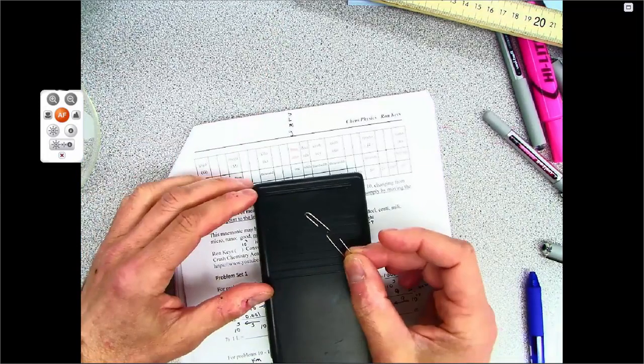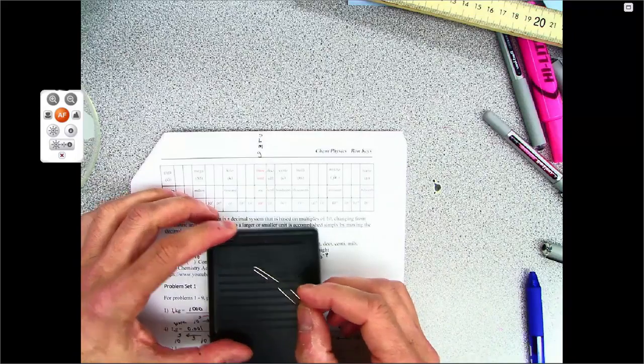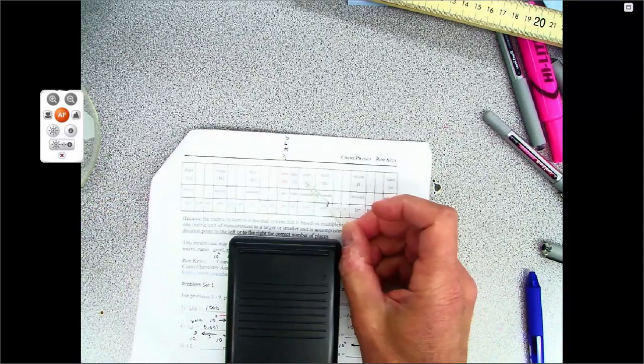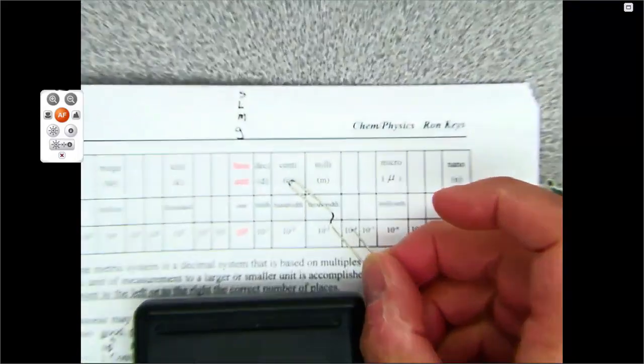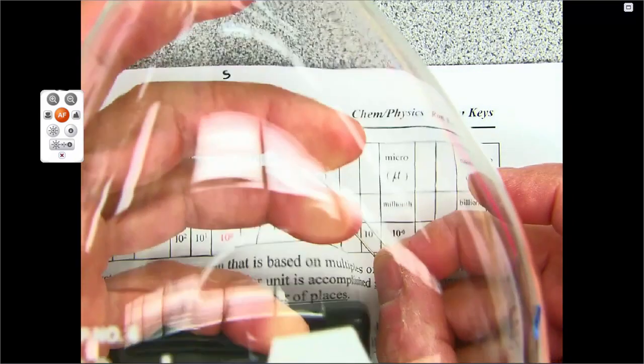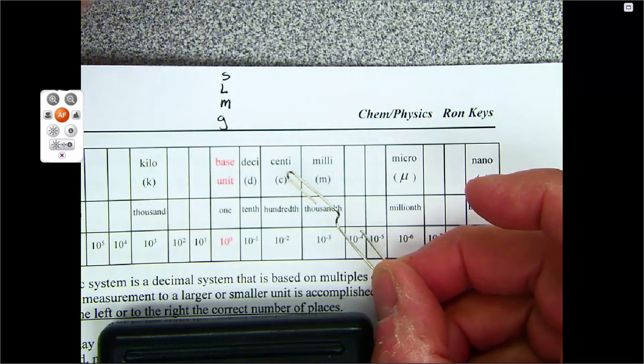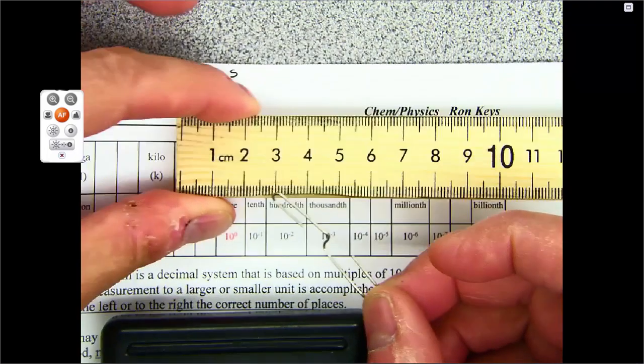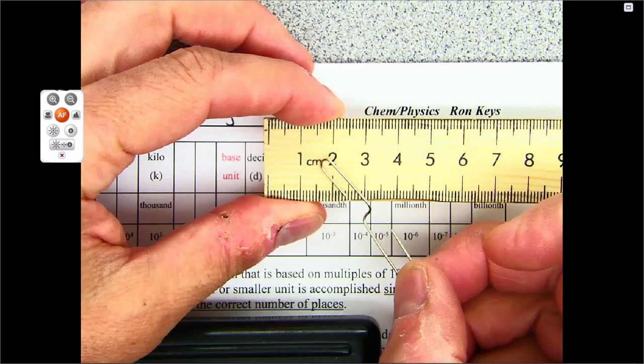If you took this gram and divided it up into a hundred equal pieces, you would have a centigram. If you divided this liter up into a hundred equal pieces, you would have a centiliter. And if you divide the meter stick up into a hundred equal pieces, you would have a centimeter.